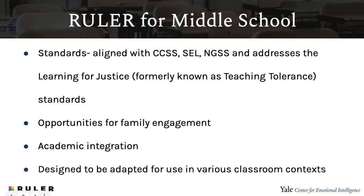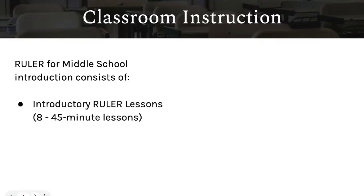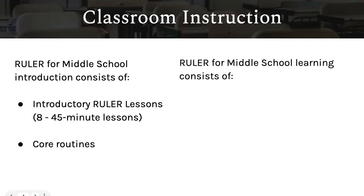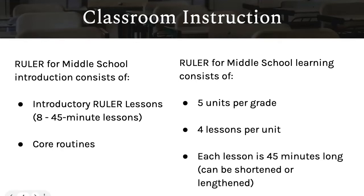It gives educators opportunities to embed culturally responsive reading material, current events, and real-life examples that will resonate with students. Ruler Middle School classroom instruction consists of eight 45-minute introductory Ruler lessons to introduce the main concepts and tools of Ruler. Next, students will adopt core routines throughout the day to practice their developing skills of emotional intelligence. Middle school students participate in units that enhance their understanding of emotions and emotional intelligence within the real world — personally, at school, in their communities, and in the world at large.